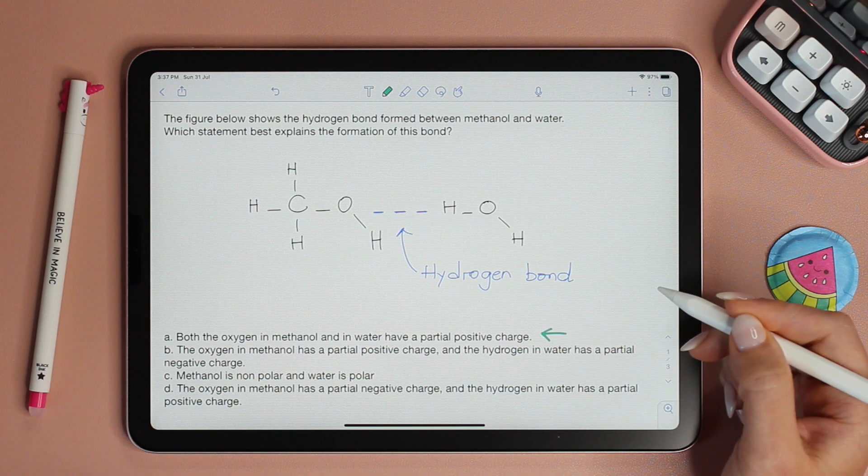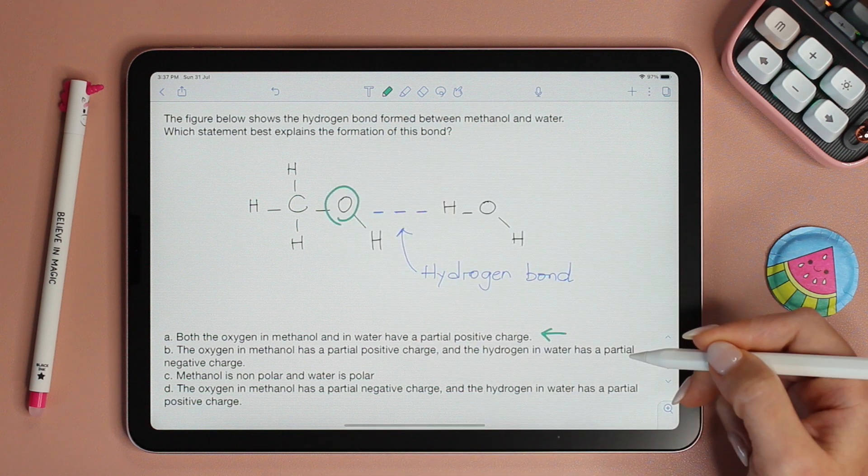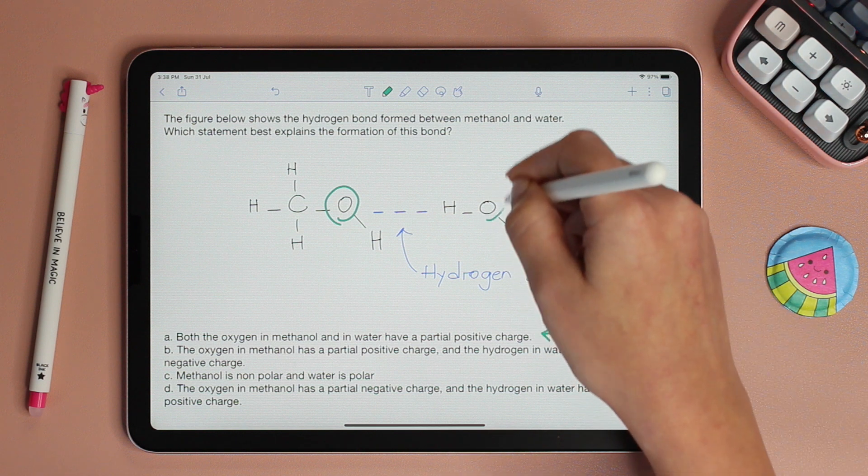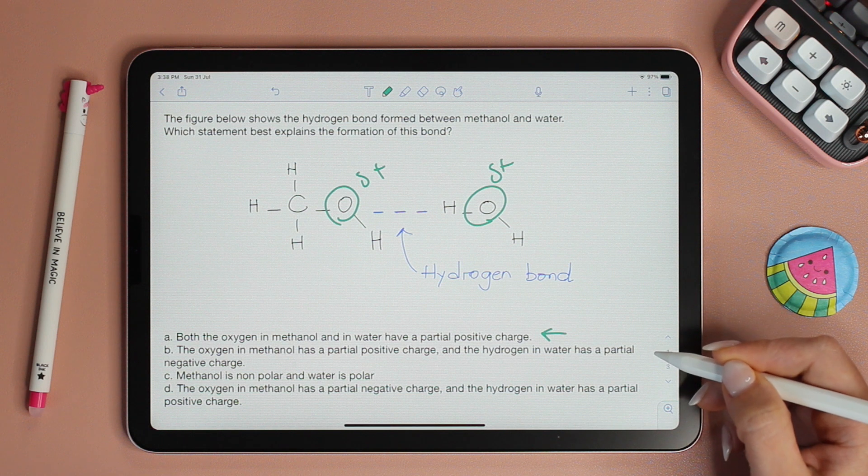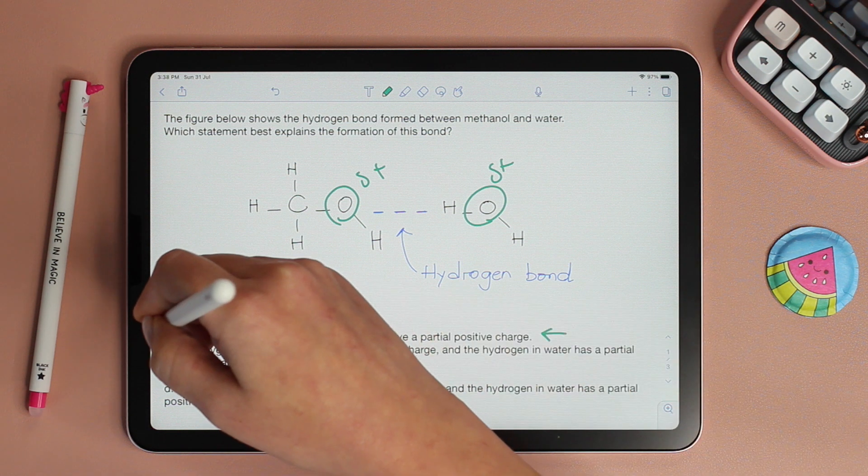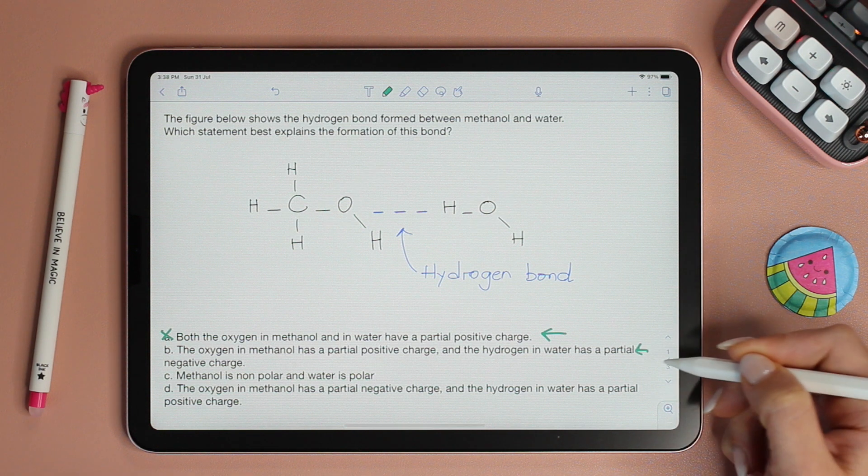Let's read choice A. Both the oxygen in methanol and in water have a partial positive charge. So it's saying that both of these are delta positive. We know that's not correct. So choice A cannot be the right answer.